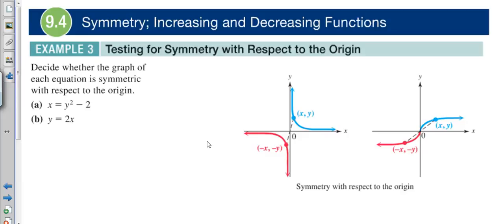In example three, we're testing symmetry with respect to the origin. We can see by these hyperbola examples that if you have a point at (x,y) and you take the opposite (-x,-y), and all those points follow that pattern, then this is symmetrical with respect to the origin.